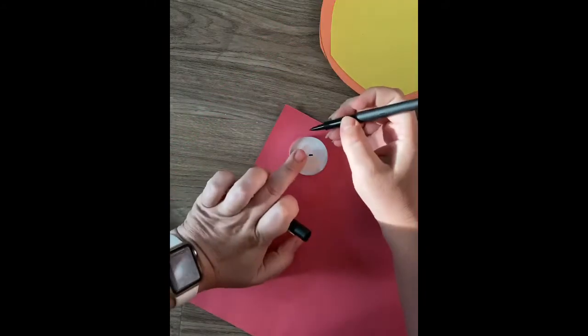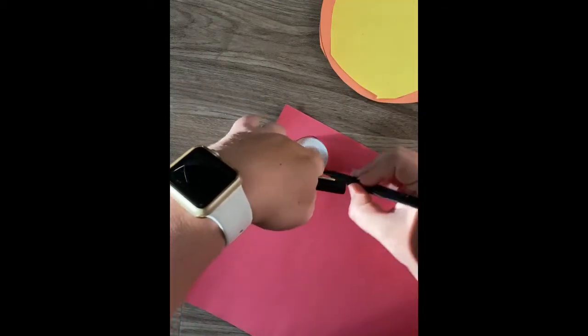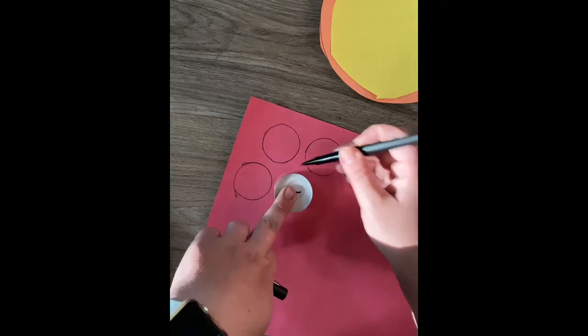Now I'd like to make some toppings. I'm going to use a much smaller circle this time and trace a whole bunch of them to make some pepperonis.